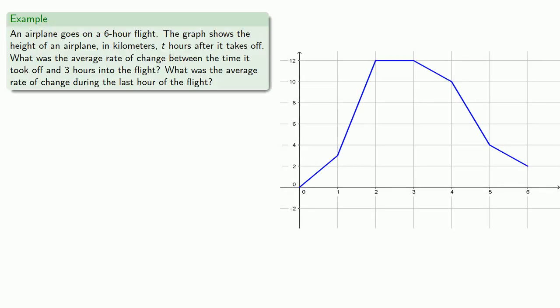Since all we need to find the change or a rate of change is the values of the endpoints, we can also find this from a graph or a function. For example, suppose an airline goes on a six-hour flight. The graph shows the height of the airplane in kilometers t hours after it takes off.